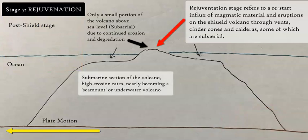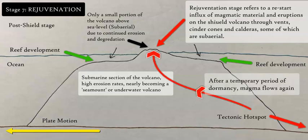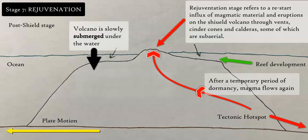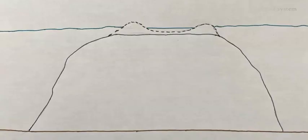Stage 7 is the rejuvenation stage, referring to renewed magma eruptions after a long hiatus following the island moving off the hot spot. How and why this happens remains highly contentious in research. During this stage, cinder cones with tephra and lava flows reappear. Coral reefs also begin to develop around the edges of the island, forming a ring structure. As submergence and erosion continue, the shrinking volcano leaves behind a reef ring enclosing a lagoon.